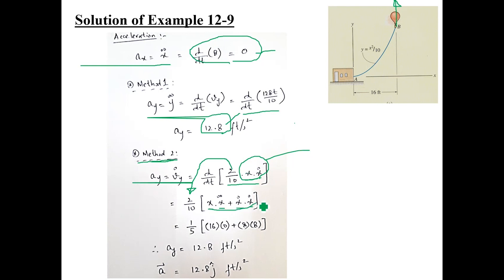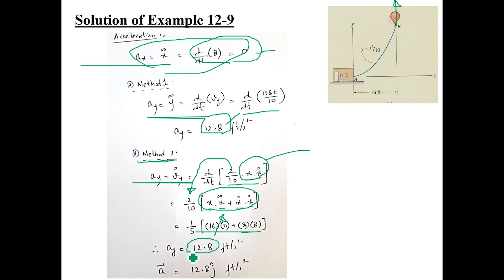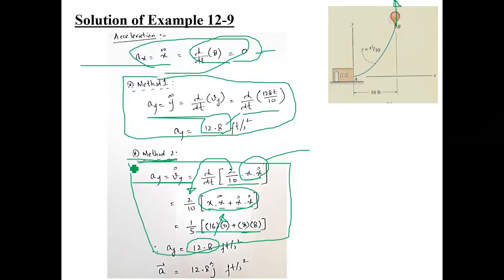Using the product rule to differentiate both terms with respect to time: since x-double-dot = 0, that term becomes zero. x-dot = 8, so you get ay = 12.8 ft/s² from chain rule as well — the same result. Whether you use Method 1 (making y a function of time) or Method 2 (chain rule), you get the same ay value. Both methods were shown so that you understand chain rule and product rule, as they will be needed in later problems.